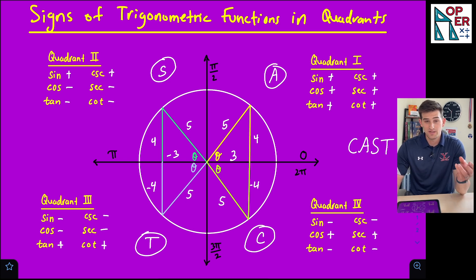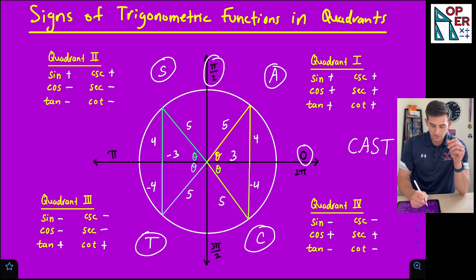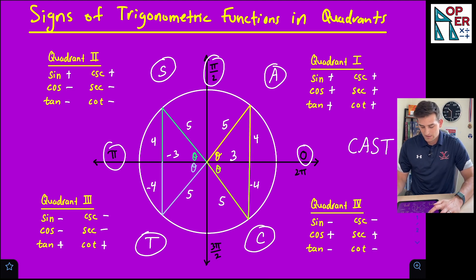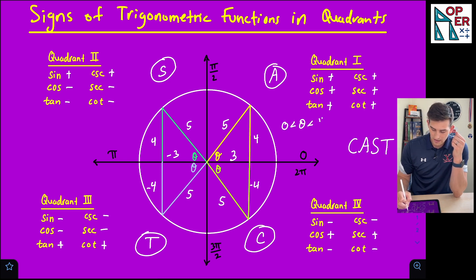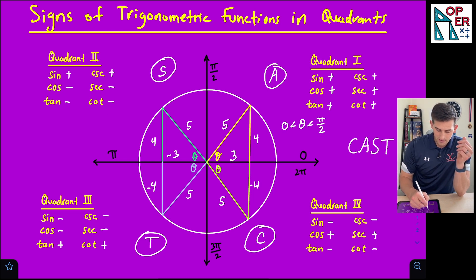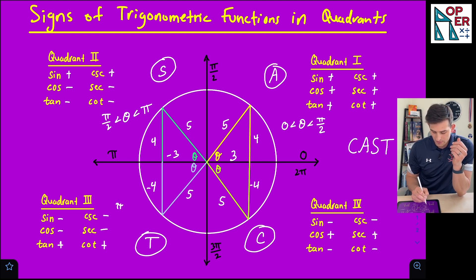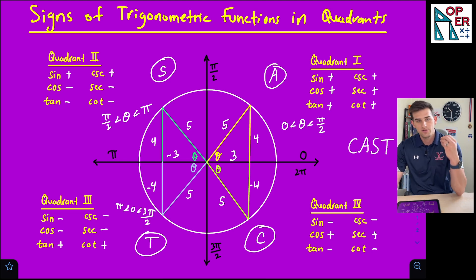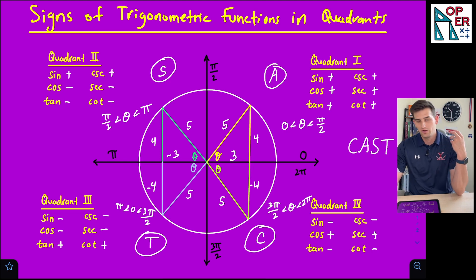In the previous video there was an interval telling us where theta was located. I've put radians on the x and y axes here: zero, pi over two, pi, three pi over two, and two pi. If theta is between zero and pi over two, you're in quadrant one. Between pi over two and pi puts you in quadrant two. Between pi and three pi over two is quadrant three. And between three pi over two and two pi is quadrant four.